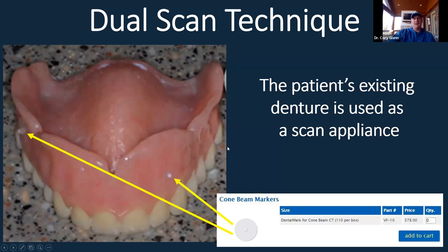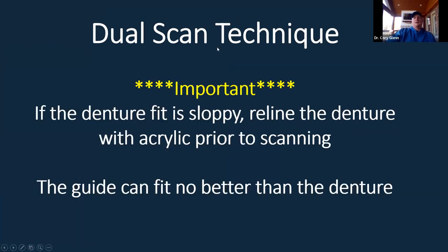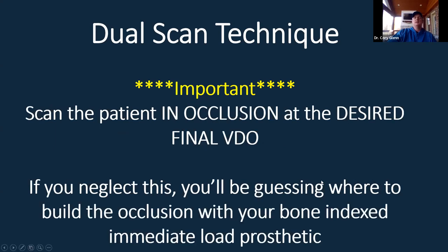If they have a good denture but it's a bit loose-fitting, reline it before the scan — medium body PVS works fine. Your guide will never fit better than the denture did at the time of scanning, since the guide is literally just a duplicate of it with holes built in. Scan them at the desired vertical in full occlusion — this is especially critical for immediate load cases.